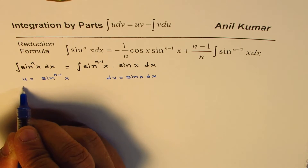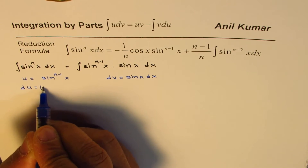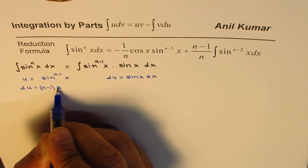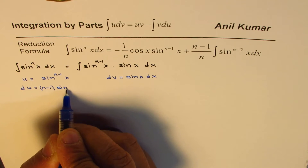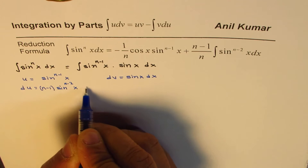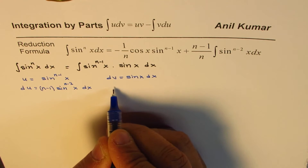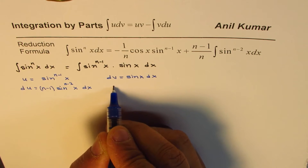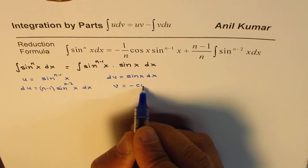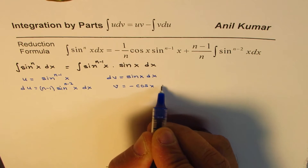Now, du equals n minus 1 times sine to the power of n minus 2 of x dx. And if we integrate dv, we get v equals minus cos x.